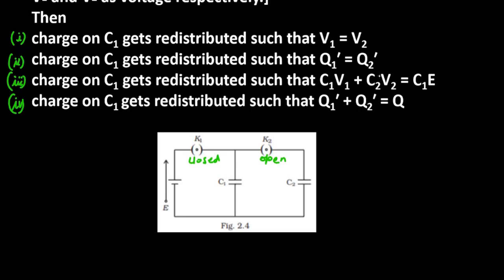Now, what happens is that because of our charge, who will charge first? C1. C1 will get charged in this condition, because K1 is closed. Closed means that our electric energy transfer can happen. So C1 will get charged because of potential E.